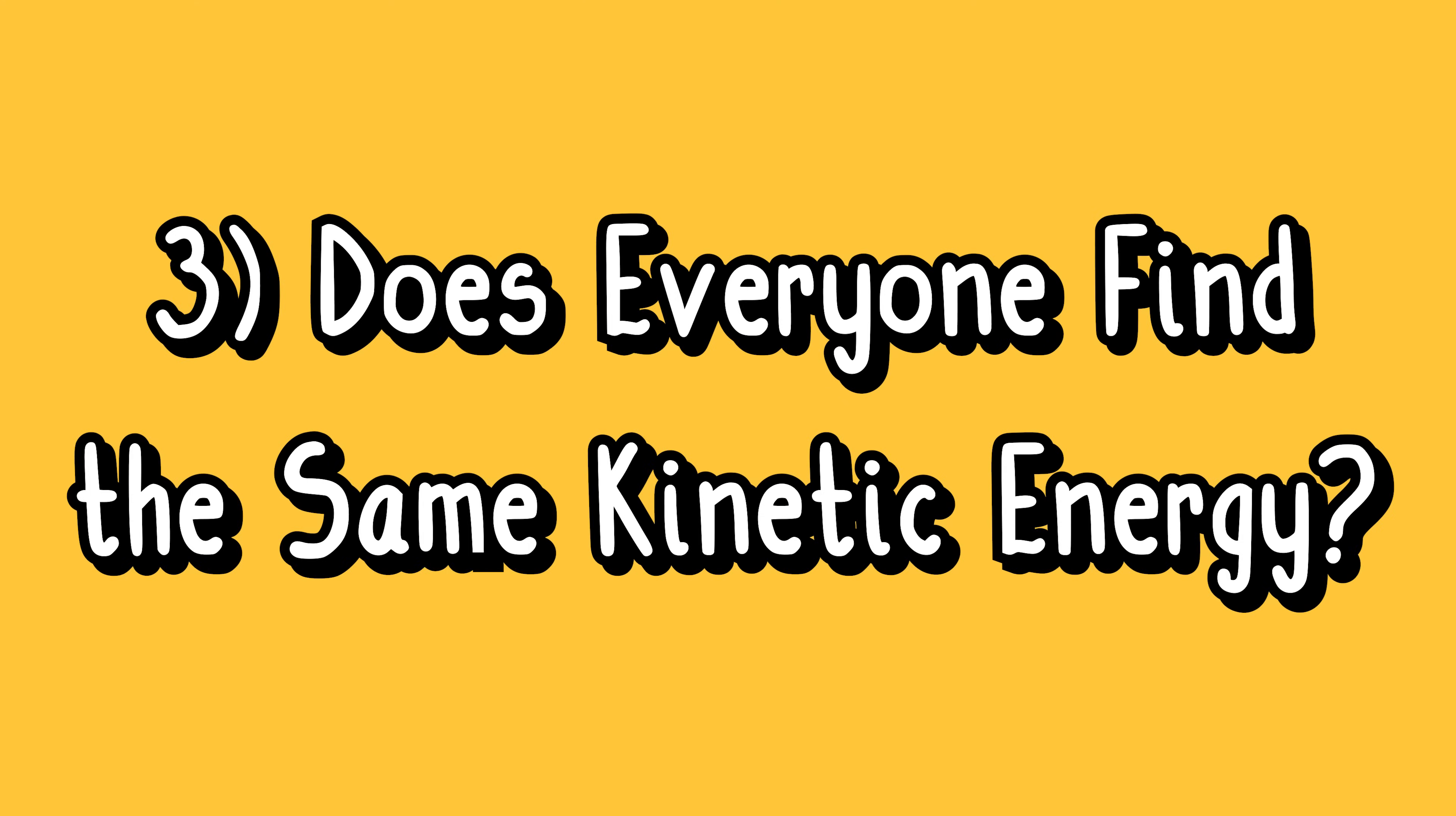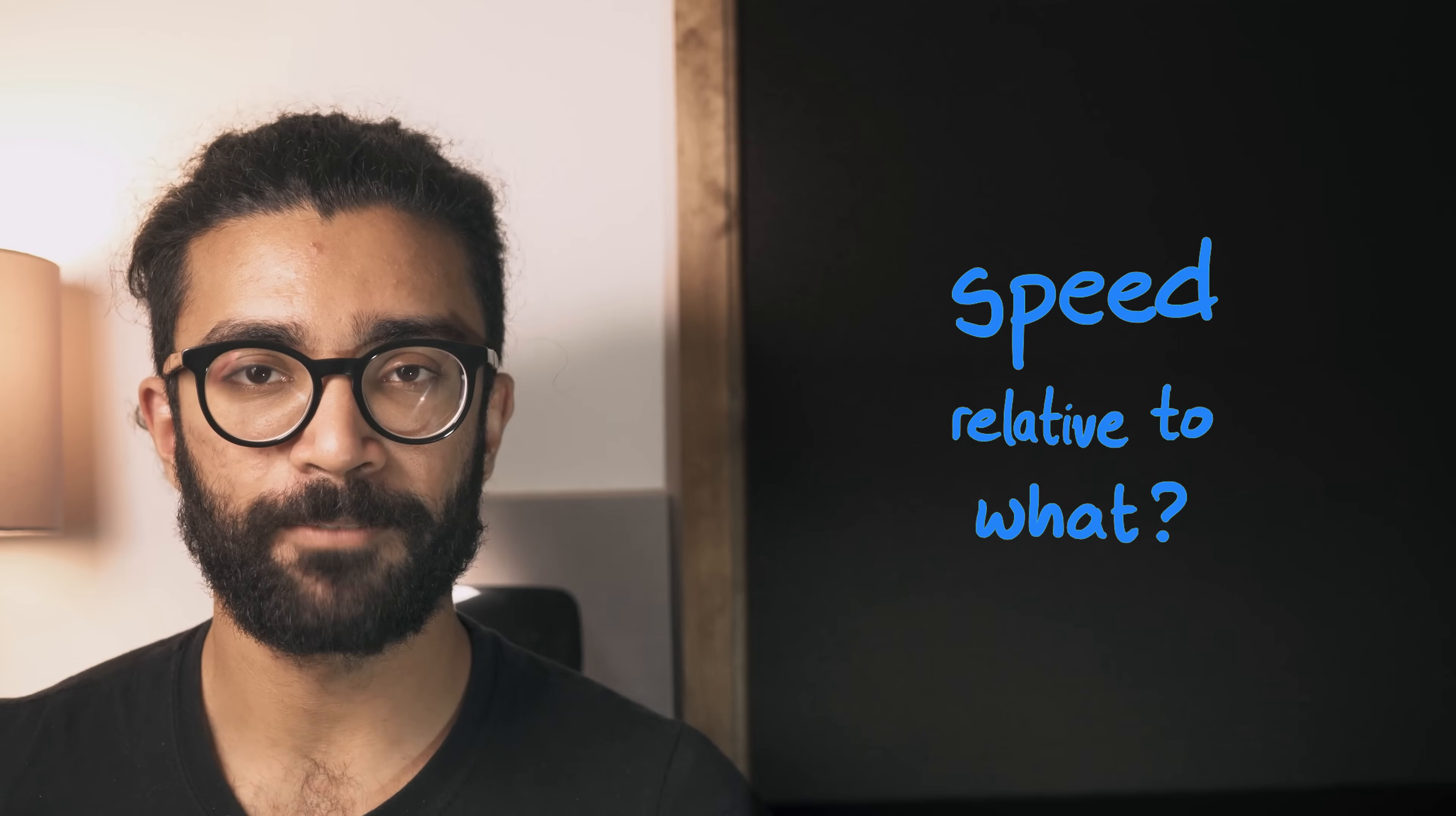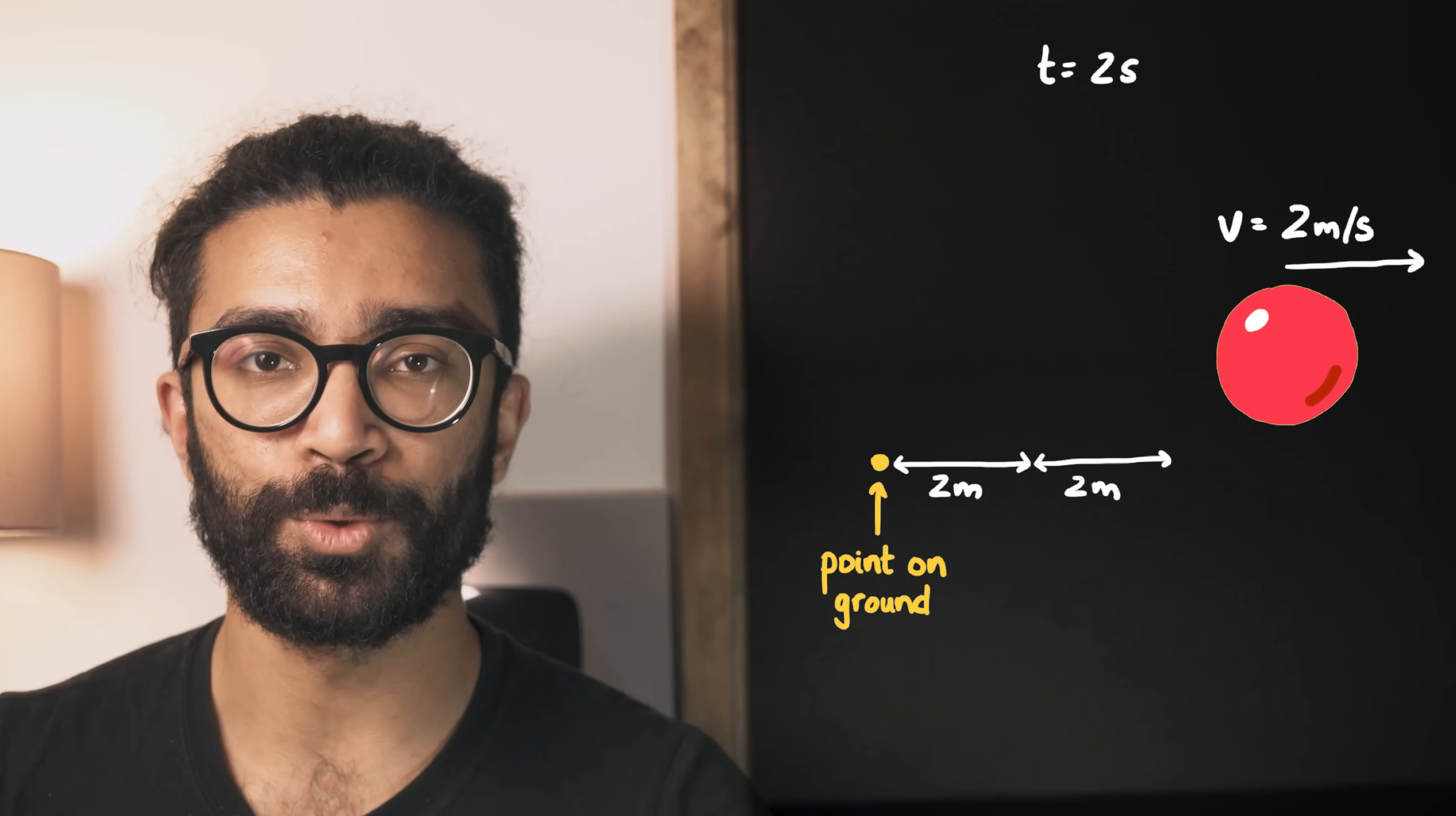Level 3. If you're familiar with the idea of reference frames, then this next thought might have occurred to you at some point during the first two levels. When we talk about kinetic energy, we always mention the speed of the object. But it's worth remembering that the speed is always measured relative to something. In other words, when we say an object is moving at two meters per second, what we usually mean is that it's moving two meters away from some point on the ground every second. In essence, the object is moving at two meters per second relative to the Earth.